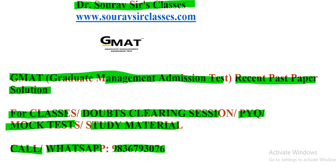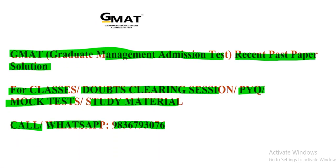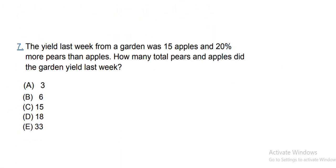So let's start with question number seven. The question says the yield last week from a garden was 15 apples and 20% more pears than apples.